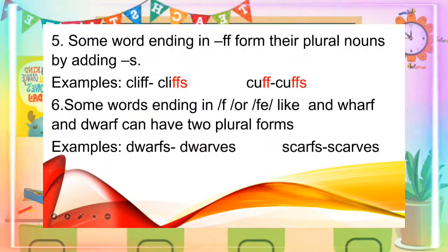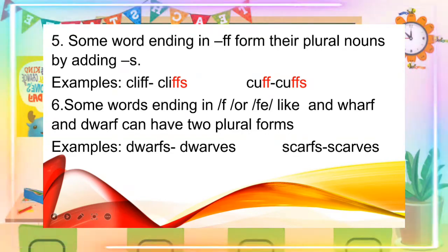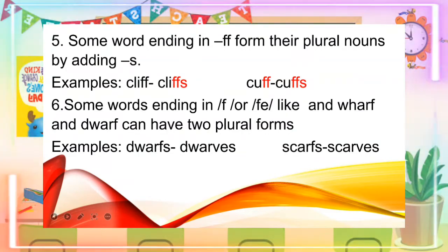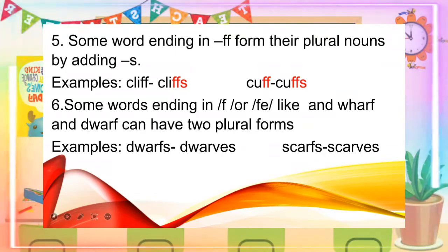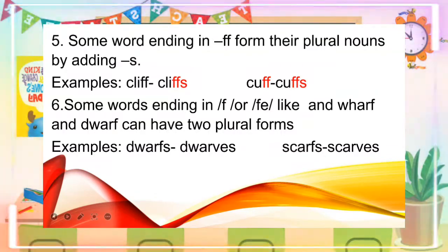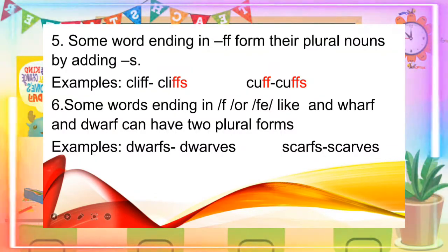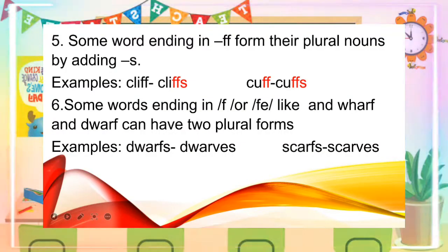Some words ending in F or FE — like wharf and dwarf — can have two plural forms. Examples: dwarves and scarves.